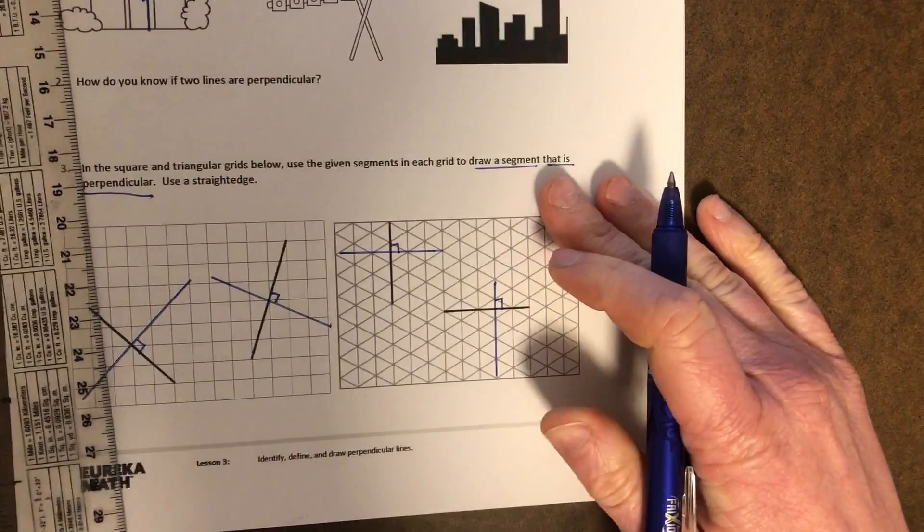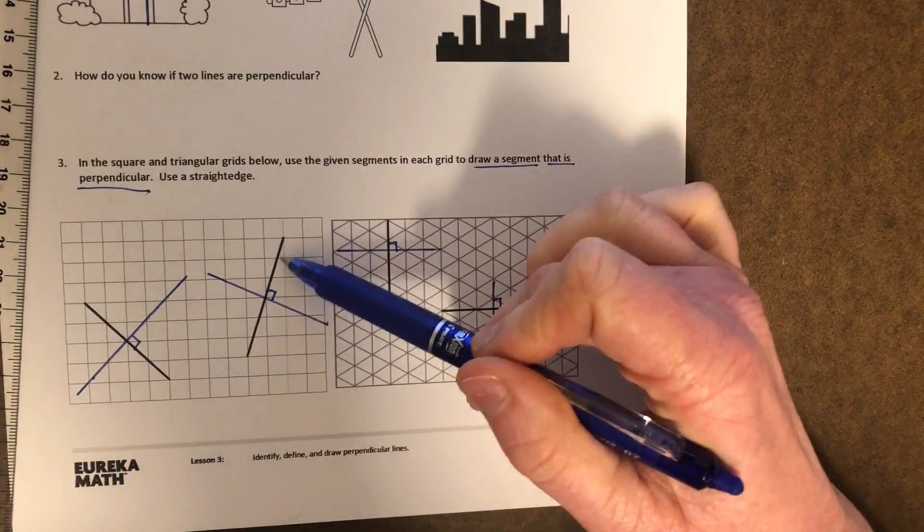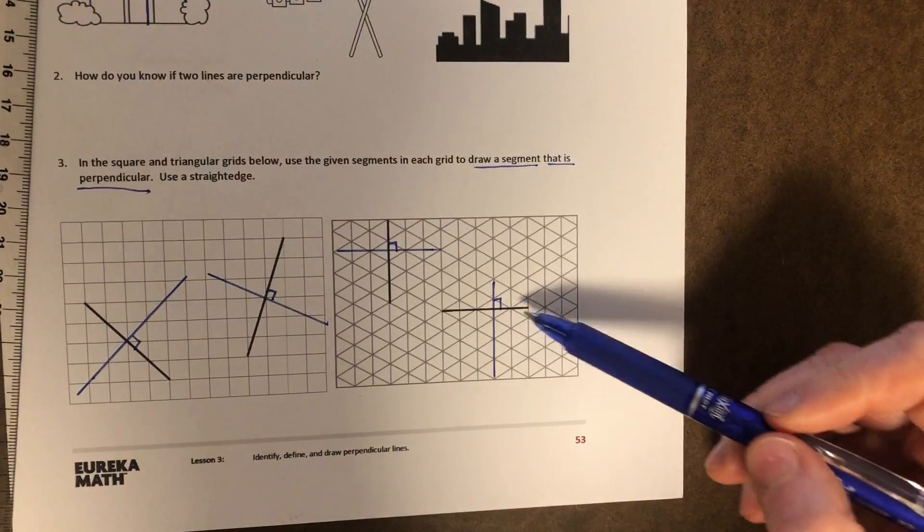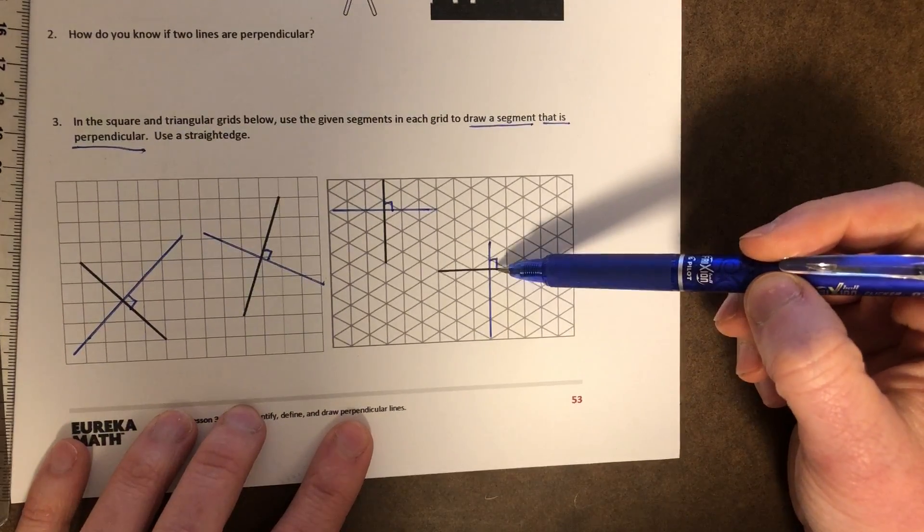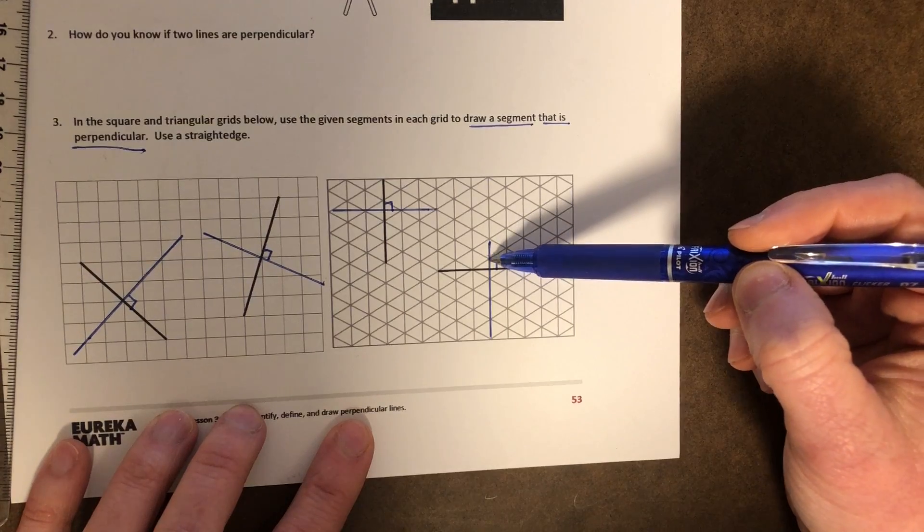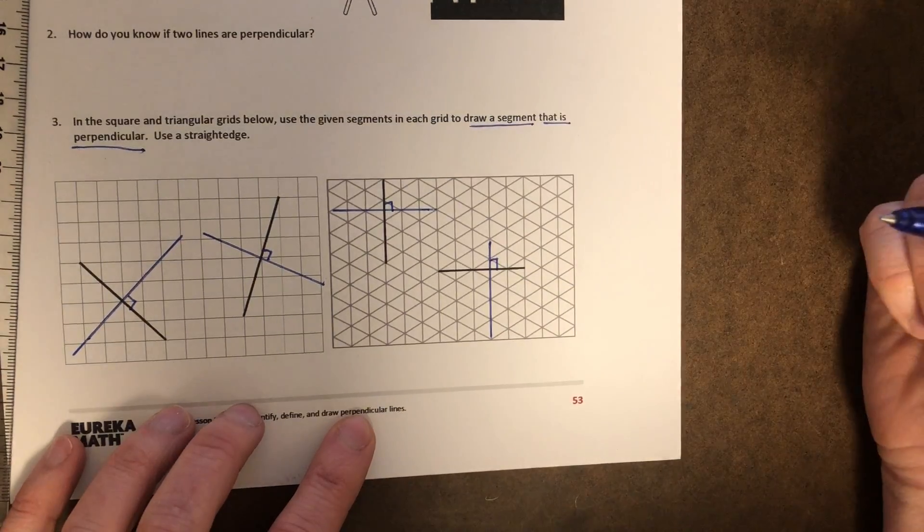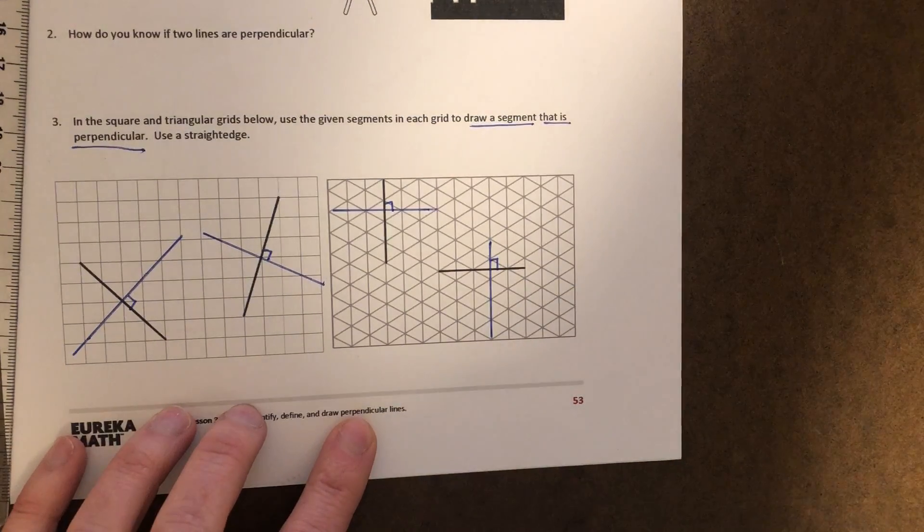Now you notice that they're not perfectly in the middle of the beginning line segment that was given to me. They can be off to the side because either way, as long as the two lines intersect and create a right angle, they are perpendicular. Give it a try on the next slide.